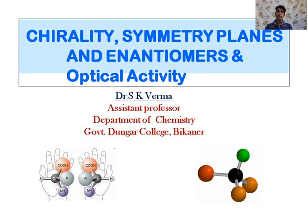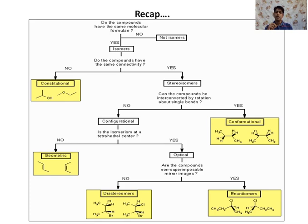Hello students, today we are going to discuss chirality, symmetry planes, enantiomers, and optical activity. This is my second lecture on stereochemistry. In our previous class we discussed introduction to stereo isomers, constitutional isomers, stereo isomers, types of stereo isomers — configurational and conformational — and within configurational isomers: geometric and optical isomers, which include enantiomers and diastereomers.